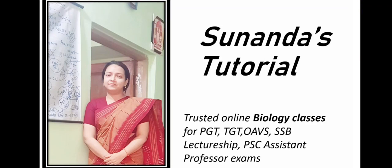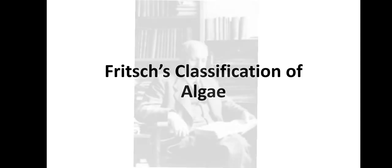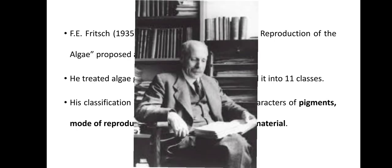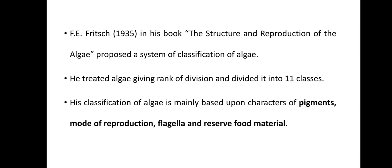Hello viewers, welcome back to a new video of Sunanda's Tutorial. Today I will discuss the Frisch classification of algae, which is the most authentic classification, proposed by the renowned phycologist F.E. Frisch in the year 1935. He published his system of classification in his book 'The Structure and Reproduction of Algae.' He placed algae as a division and divided it into 11 classes.